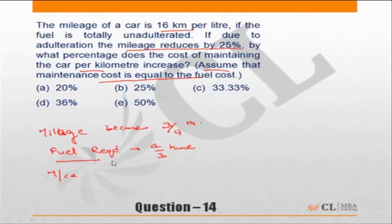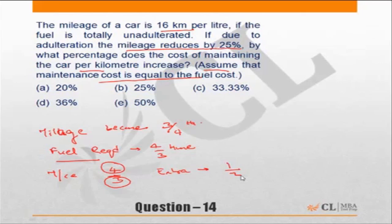Maintenance cost is directly proportional to fuel cost, so maintenance cost will also become four-thirds times. So originally if you are spending three rupees in maintaining the car, now you will need to spend four rupees. The increase will be one on every three rupees, which is equal to 33 percent. The correct answer is choice C. The mileage has become three-fourths times, meaning the fuel requirement becomes four-thirds times.